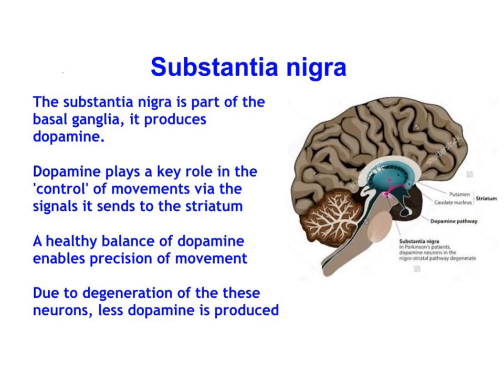The basal ganglia is a group of brain structures, and one specific structure — the substantia nigra — produces dopamine, the neurotransmitter that plays a key role in the control and regulation of movements. We need the substantia nigra to produce dopamine in the right balance. An excess amount of dopamine produced by the substantia nigra will result in uncontrolled movements and tics.